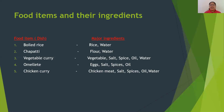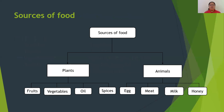So we can say that there are two major sources of food: plants and animals. A few examples of food which we obtain from plants are fruits, vegetables, oil, and spices.